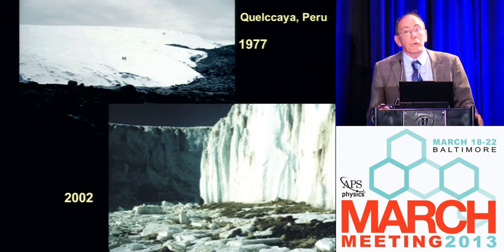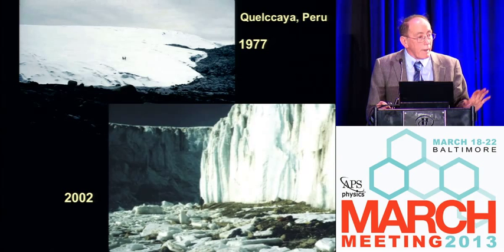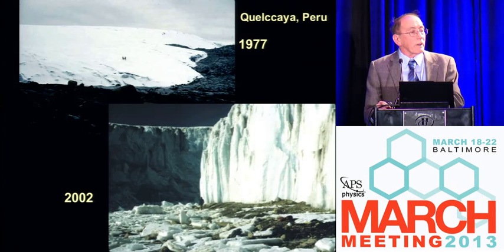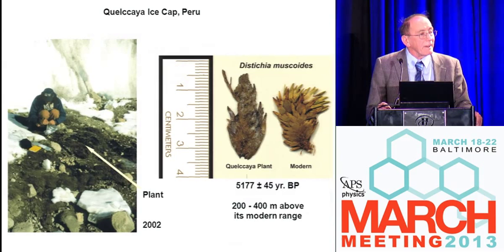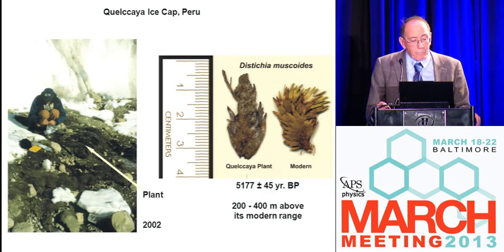The upper photo shows the margin of the Kalkia in 1977 — that whole area is now a lake. The bottom photo shows the margin of that lake in 2002. Right at the base you can see a man walking — the cliff is 30 meters high. We found a wetland plant deposit, perfectly preserved. This plant could be identified and dated, and it shows us that this ice cap hasn't been smaller in 5,200 years — otherwise this plant would have decayed had it been exposed.